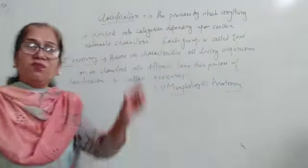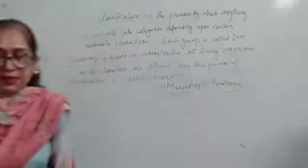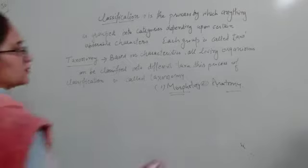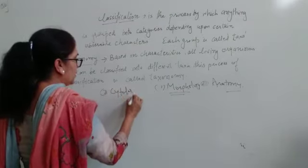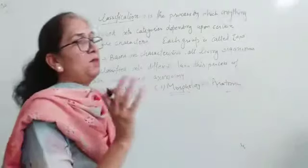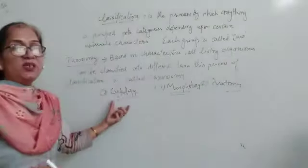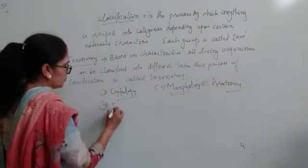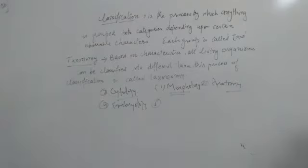Second thing, we have to study the morphology, then on that basis we do grouping. Then second point, we study the anatomy - how the internal structure of that organism is. Then third point is cell structure - cytology. We study the cell. What type of cells that organism is having. Fourth is embryology - how that organism is developing.